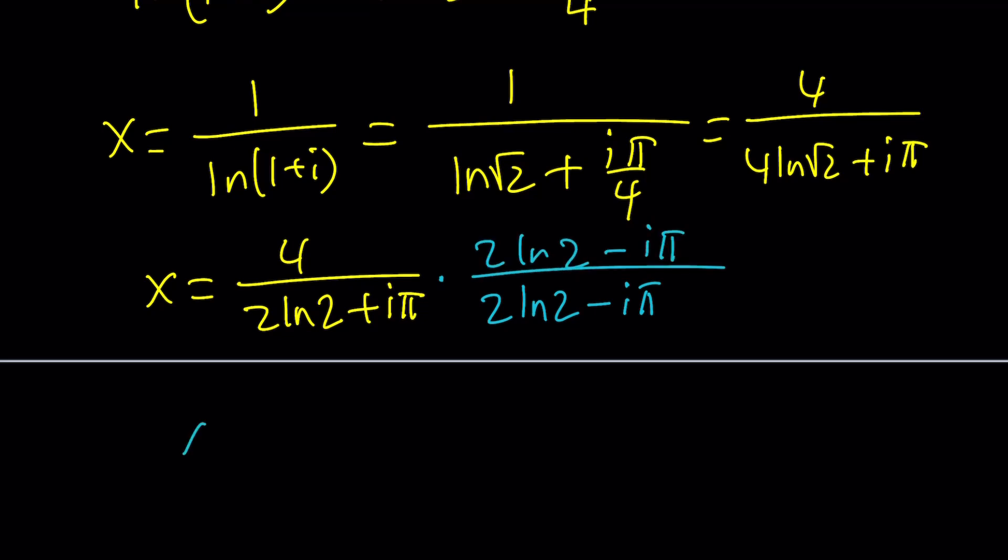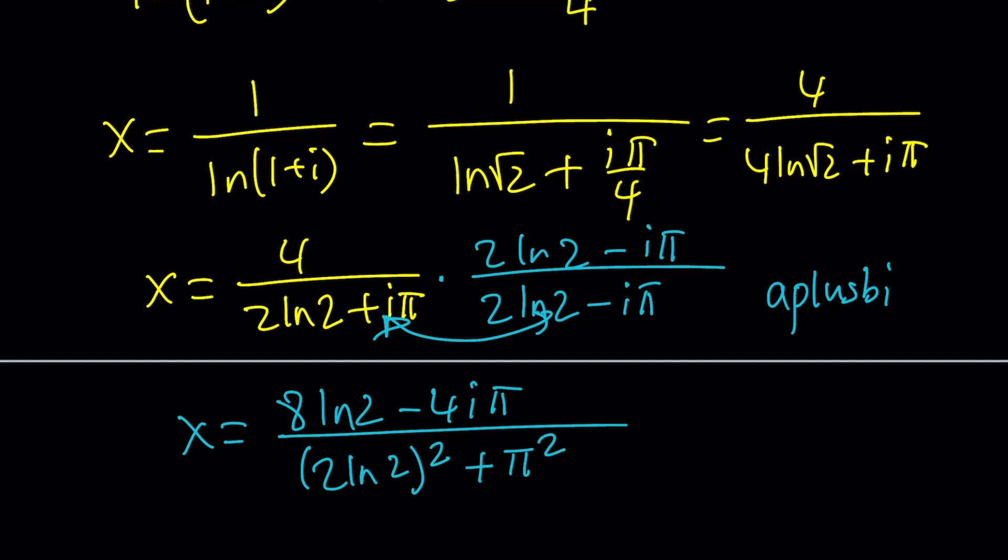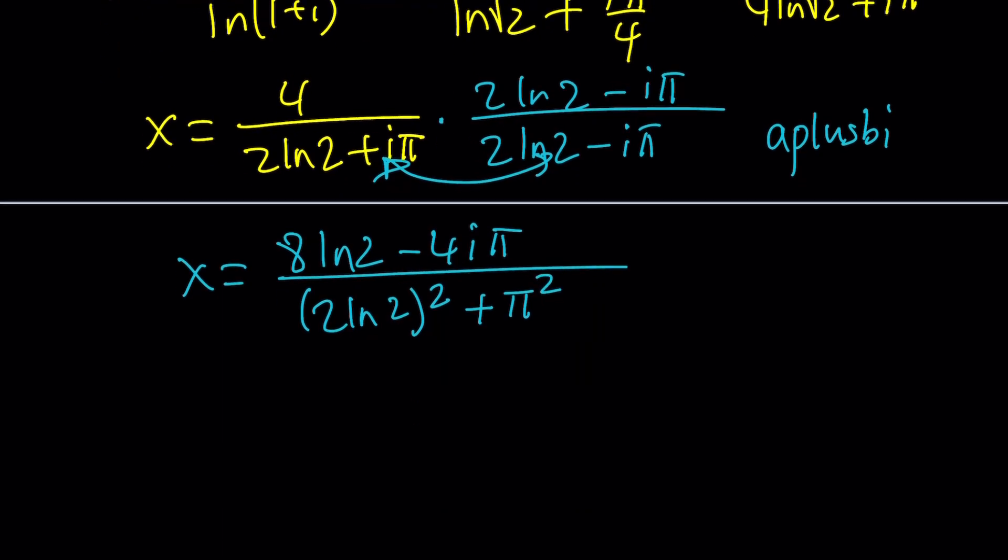Let's go ahead and see what happens. We're going to distribute. The numerator is just going to be 8ln2 - 4πi divided by... when you multiply a complex number by its conjugate, the answer is always a real number, and it is the sum of two squares. So it's going to be (2ln2)² + π². Real part squared plus imaginary part squared. We don't include i. So that should be the answer in the simplest form.